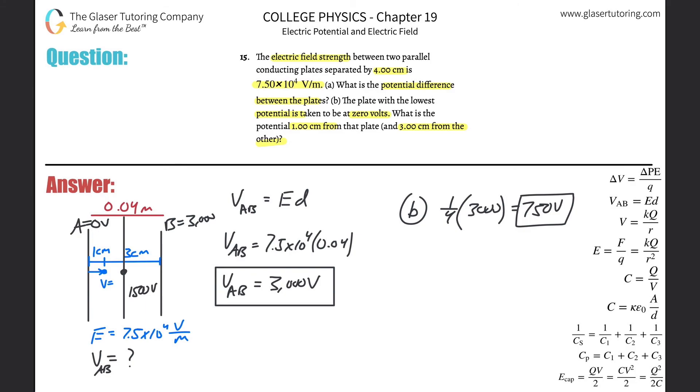If it were closer, right, the 3,000 volt plate is further away from this point than this point. And like I was mentioning, they're proportional. So, I mean, that's all. Cool.